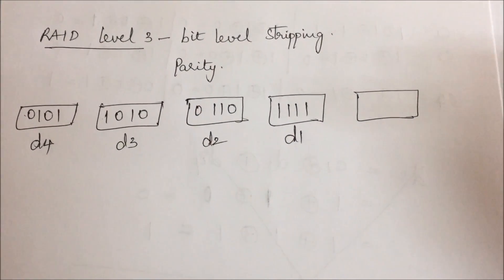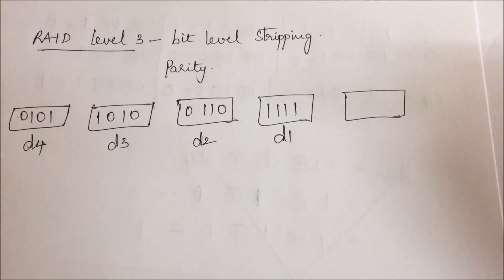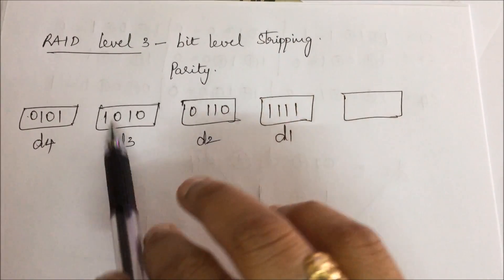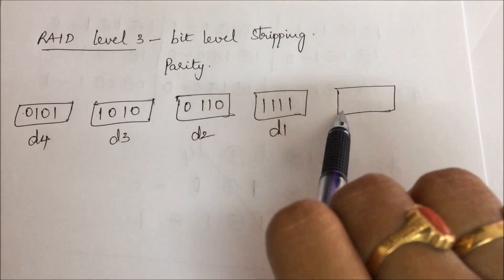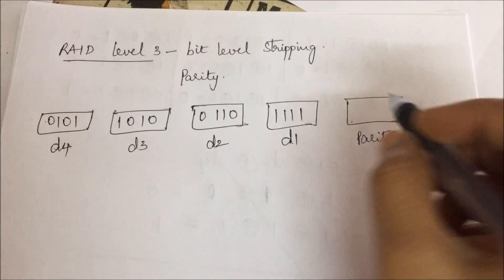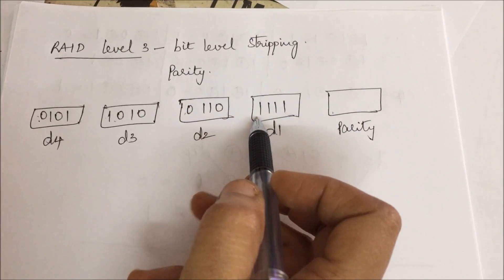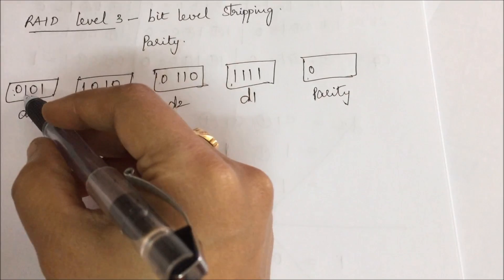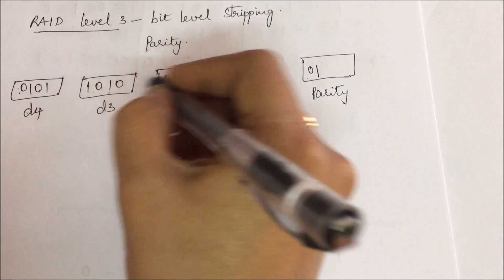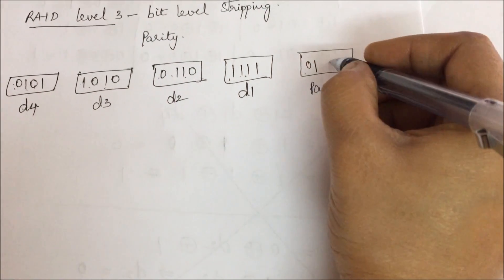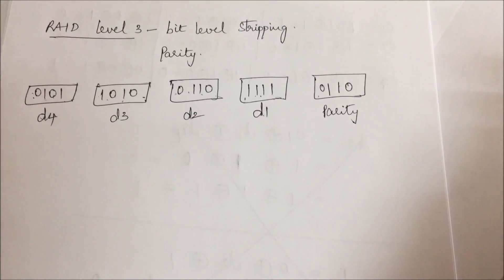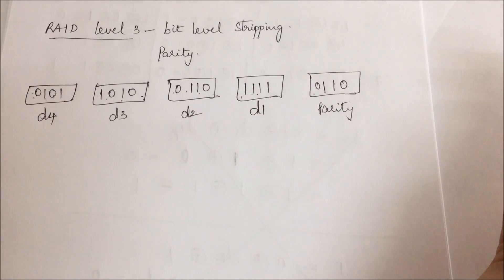Now let us see how data recovery takes place in RAID level 3. Similar to RAID level 2, it uses bit-level stripping with D1, D2, D3, D4, but parity is used to maintain the redundant disk. Using even parity: for 0,1,0,1 there are already an even number of 1s so parity is 0; for 1,0,1,1 there are three 1s so parity is 1; for 0,1,1,1 three 1s so parity is 1; for 1,0,0,1 two 1s so parity is 0. This is how redundant data is maintained in RAID level 3.